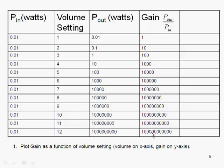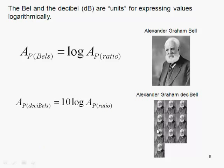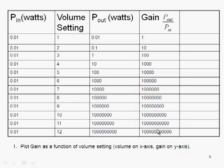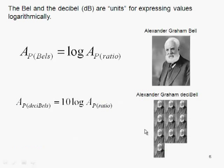Well, this is a problem that needs to be solved for sure. The way that we do that is we don't plot this thing out linearly, we plot it out exponentially. We use something called the decibel, which is based on something called the bell. The bell and the decibel are units for expressing values logarithmically. If we take the log of each one of those numbers, that's going to give us the number in bells.